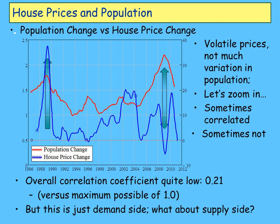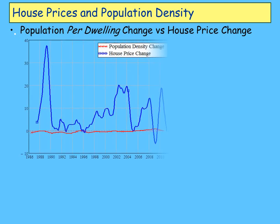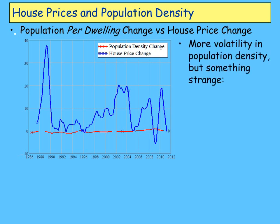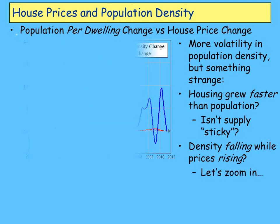People could say I'm just looking at the demand side and leaving out the supply of housing — surely when you look at supply versus demand, the relationship will turn up. What I'm looking at here is population density: how many people there are per house. For most of the time, population density has actually been falling. Except for the last four years, housing grew faster than population, which is strange because we're normally told how sticky supply is. We actually had falling density with prices rising.